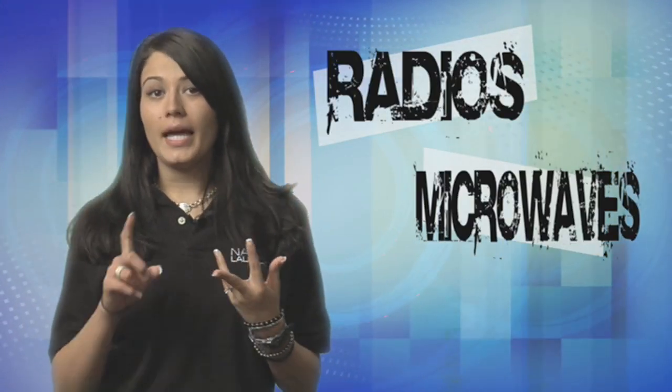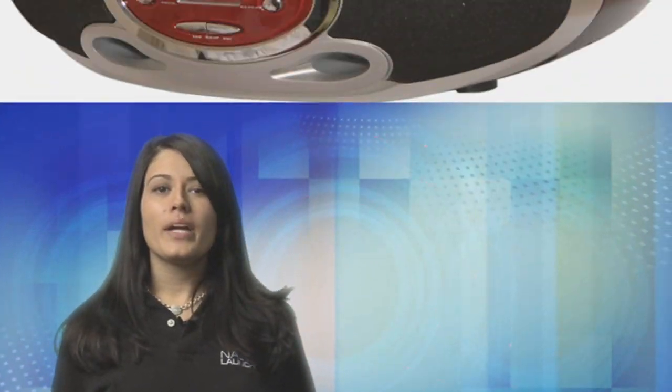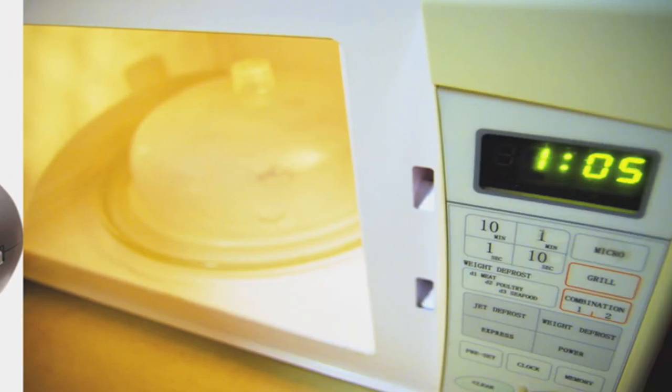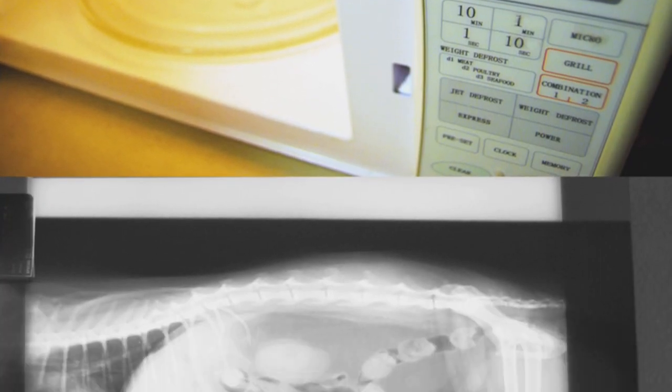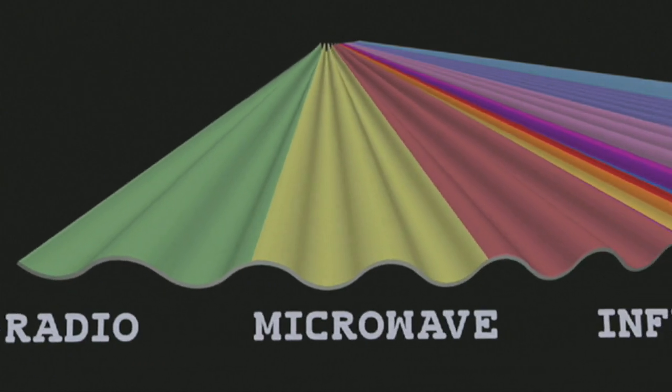What do radios, microwaves, and x-rays have in common? Well, radios play music, microwaves are a fast and easy way to cook food, and x-rays allow us to see our insides from the outside. So how do these three things have a common link? They're all part of a broader spectrum, the electromagnetic spectrum to be exact.